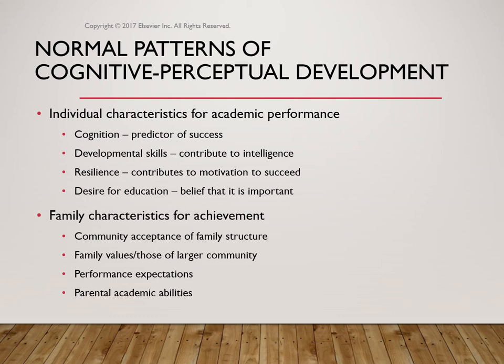When we look at individual characteristics, we look at cognition as a predictor of success, developmental skills contributing to intelligence, resilience, motivation to succeed, and desire for education. We also have to account for family characteristics — the community acceptance of family structure, different ethnic and cultural backgrounds with different roles. Education may not be readily acceptable in some cultures because there is an expectation to provide for the family regardless of education. Family values, performance expectations, and parental academic abilities all matter — can parents stay on the same academic level as these children as they age?